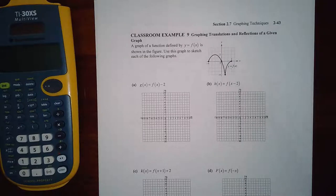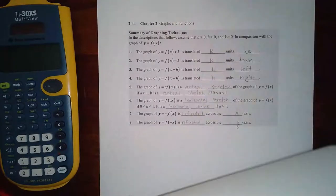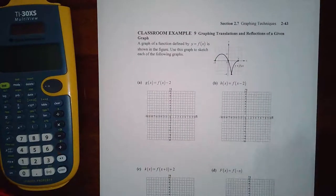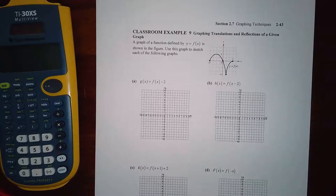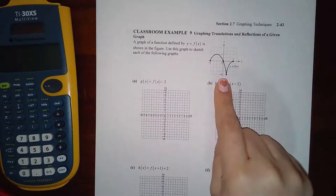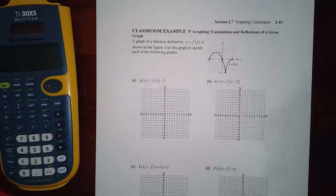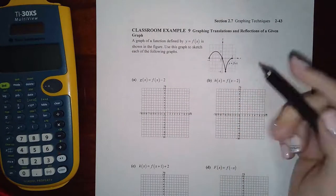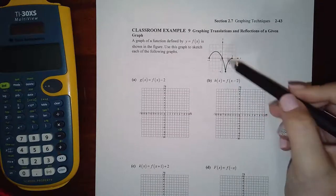Okay, here we have example nine — the last example for this video, and then we've got the big summary. For this video, they're basically giving us a graph and they want us to do the translation that's happening to it. So we have to identify what's happening and then apply that to each of these points to make our graph have the same kind of curvatures.